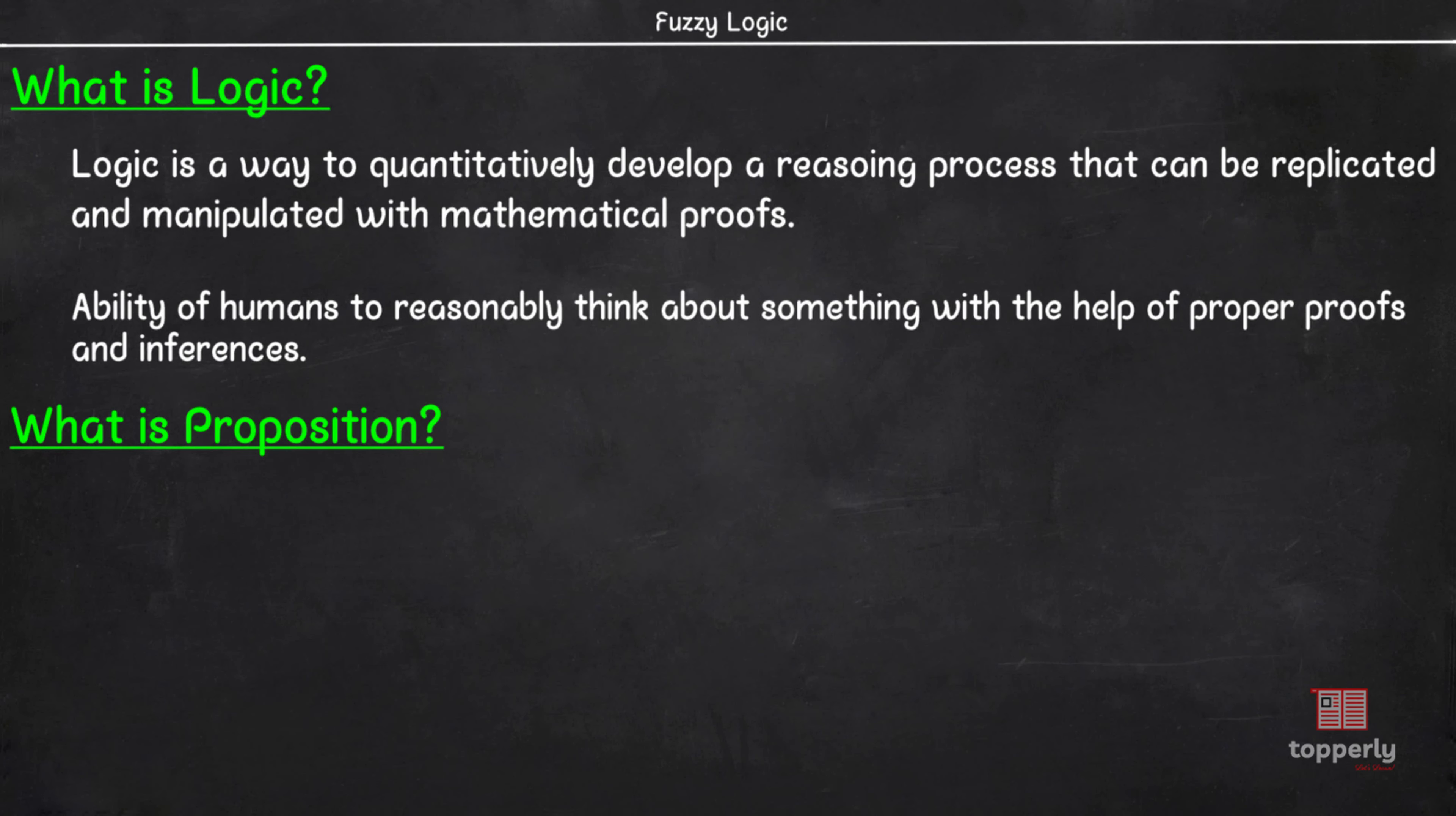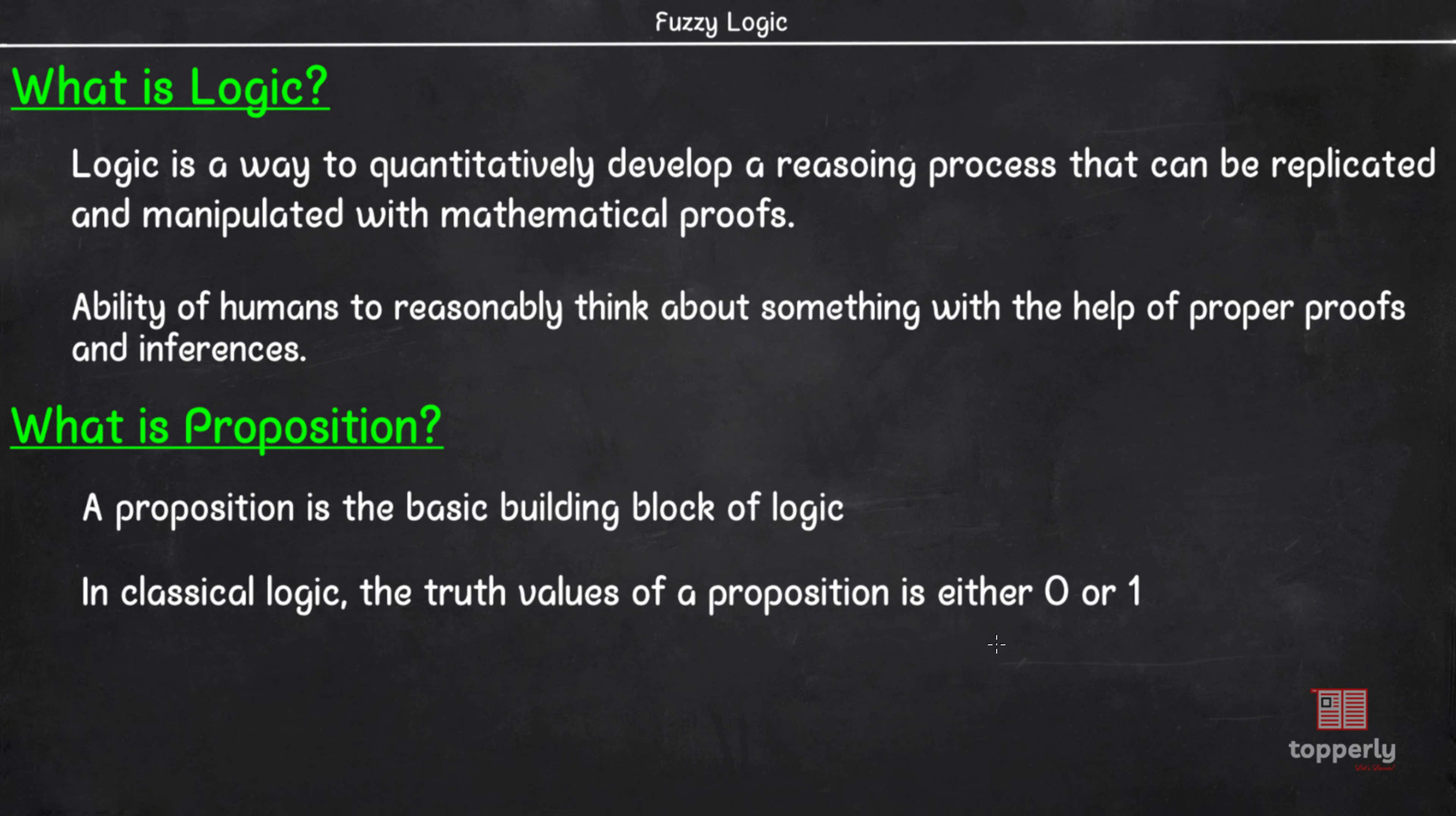A proposition is the basic building block of logic. In classical logic, the propositions are required to be either strictly false or strictly true, but not both. Fuzzy logic, on the other hand, allows the truth value of a proposition to be any value between true and false. In this video, we will review some basic concepts and principles in classical logic. So, let's start our lecture.